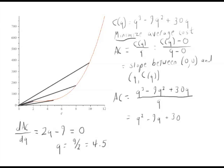Graphically, by drawing lines between 0, 0 and points on the curve and seeing when that slope is the smallest, or taking your cost function, dividing by Q, differentiating, and setting it equal to 0. Those are the two ways to find minimum average cost.